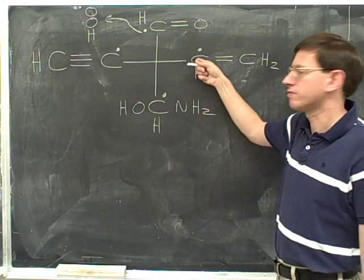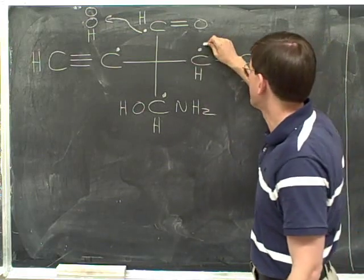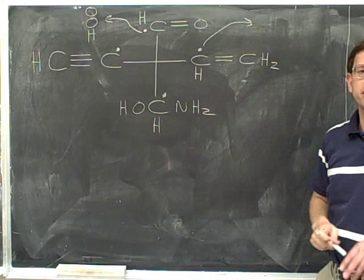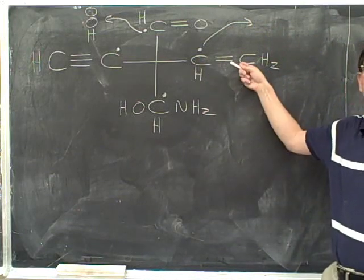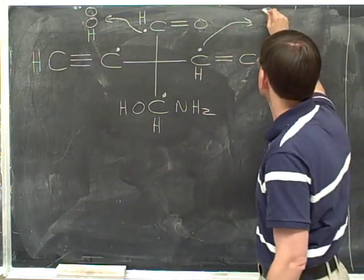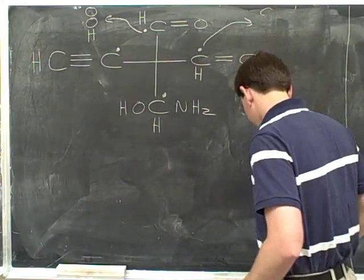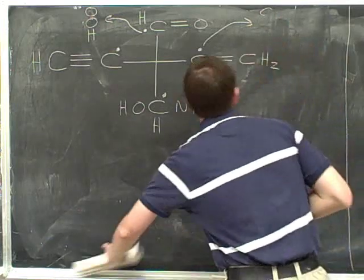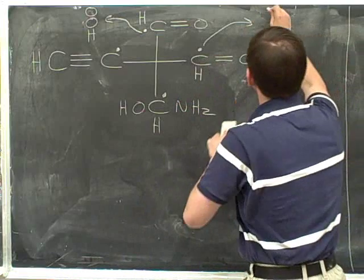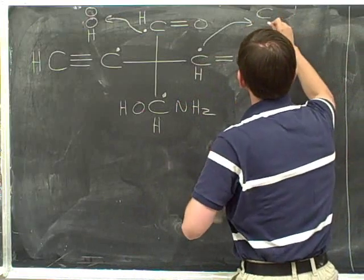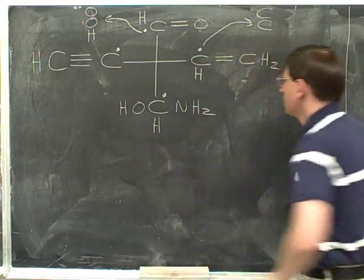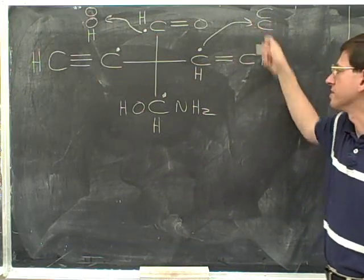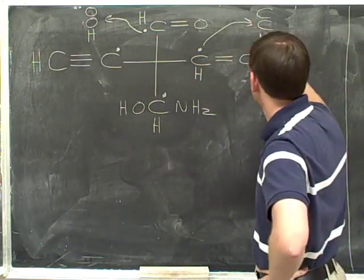Now you should be able to figure out how to make a list for the carbon on the right. What are the three things that this carbon is attached to? We'll treat the double bond to carbon as two separate carbons. Since the dotted atom is double bonded to a carbon, we'll write two carbons down, and the third atom is a hydrogen.